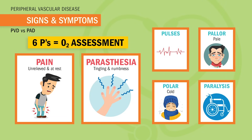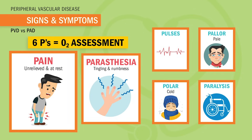So write this down — the two most important Ps that will be on your test and usually always come up in prioritization questions. Number one is pain, but not any kind of pain: unrelieved pain at rest — big keyword right there. When claudication is unrelieved at rest, this means PAD has moved into the most severe stages.